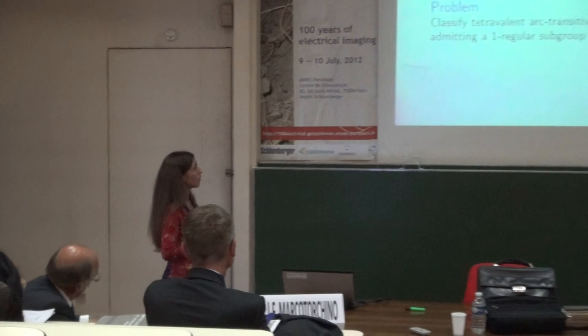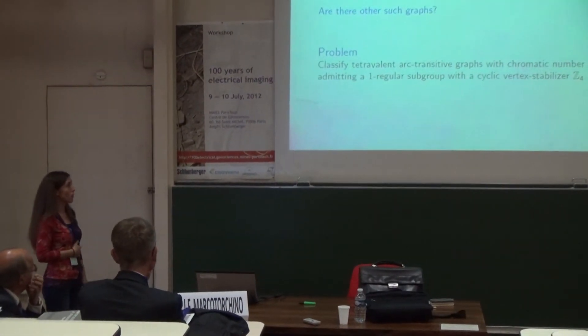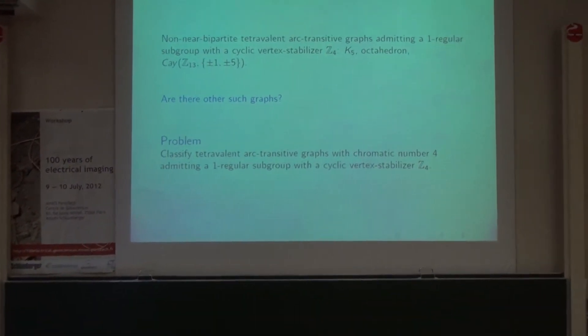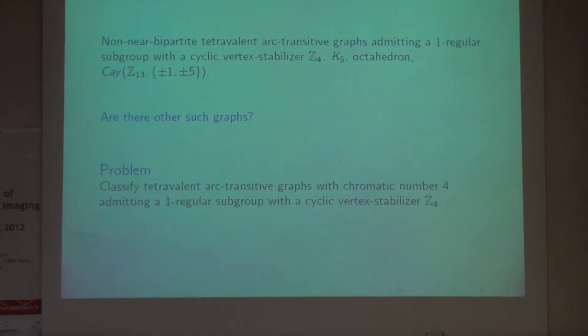And to answer this question the following problem needs to be considered first. Classify tetravalent, arc transitive, graphs with chromatic number four, admitting for a one-regular vertex with a cyclic proper stabilizer.